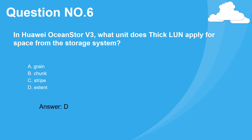Question 6. In Huawei OceanStor V3, what unit does a thick LUN apply for space from the storage system? A. Grain. B. Chunk. C. Stripe. D. Extent. Answer: D.